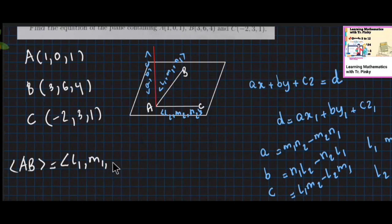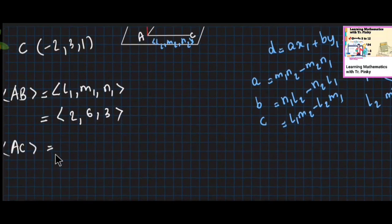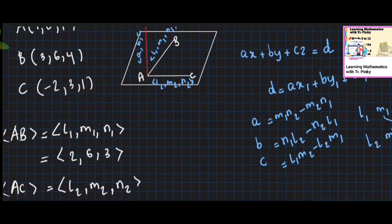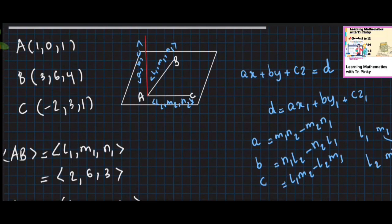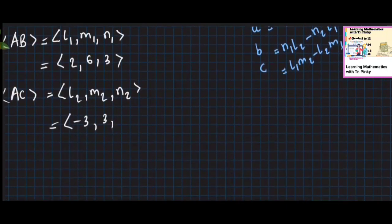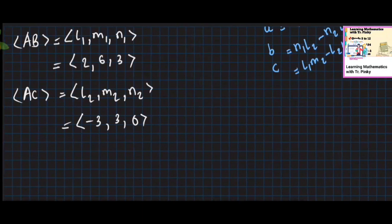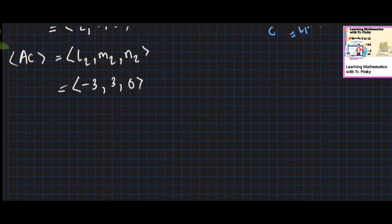Then you have L1, M1, N1. For the first example: AB gives us 3 minus 1 is 2, 6 minus 0 is 6, 4 minus 1 is 3. So L1, M1, N1 is (2, 6, 3). For L2, M2, N2 the values are minus 2, minus 1, minus 3.